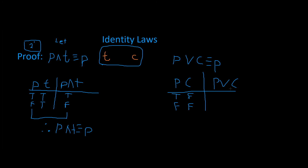Right here we have P OR C. We're going to look at both P and C. For an OR statement, one has to be true — so when P is true, this is true. When both are false, this is false. We look at P and P OR C, because that's what we're trying to prove. We can clearly tell these two columns are equivalent to each other. P OR C is logically equivalent to P, and that is our answer. And now we've proved the identity law.